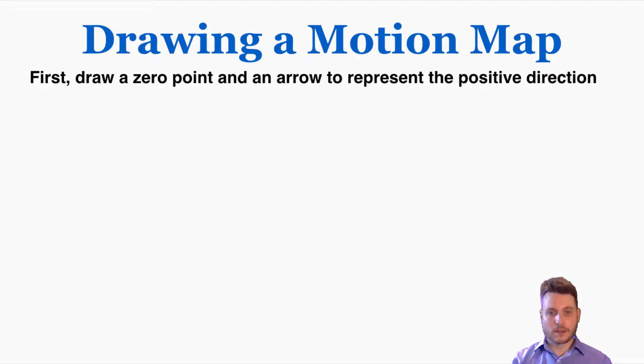The first step in drawing a motion map is to decide on a zero point and then draw an arrow to represent the positive direction. Both of these are entirely arbitrary. You can choose any point you want to be the zero point. In general, that's just a common point where we measure other positions from. So if you're 2 meters in the positive direction away from the zero point, we would say you're at a position of positive 2 meters, totally arbitrary so you get to decide where that is.